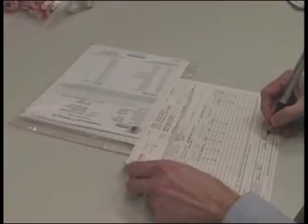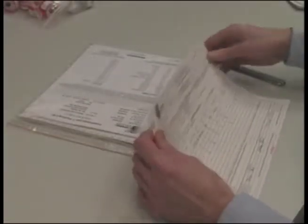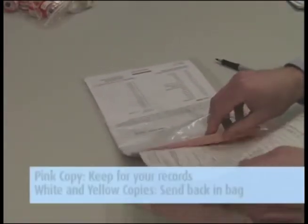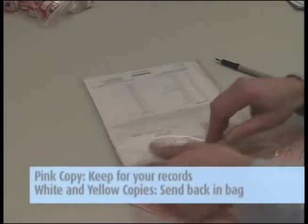Then, complete the chain of custody form. It is important that you include all the information requested in order to ensure the turnaround time of your samples. Remove the pink copy and keep this for your records.